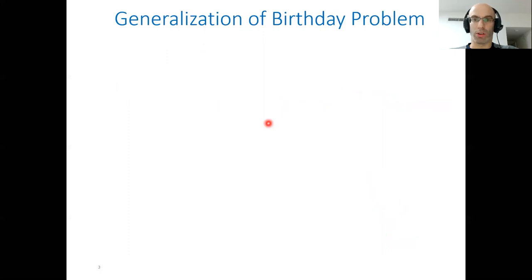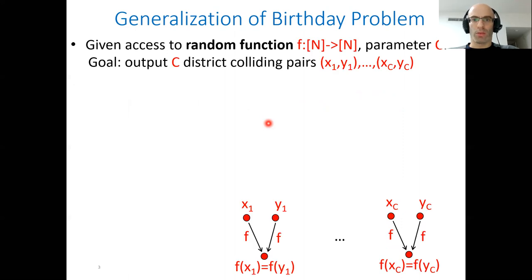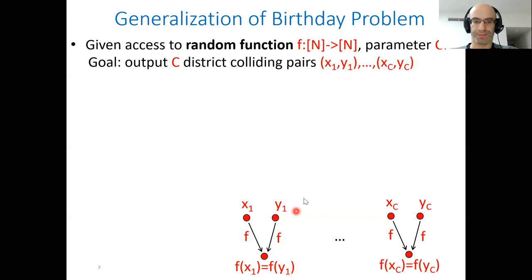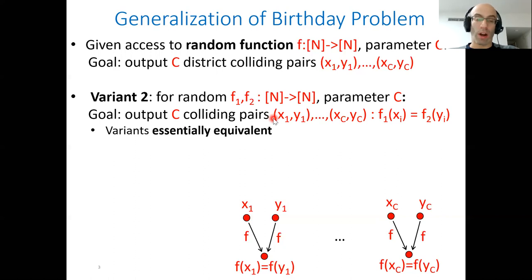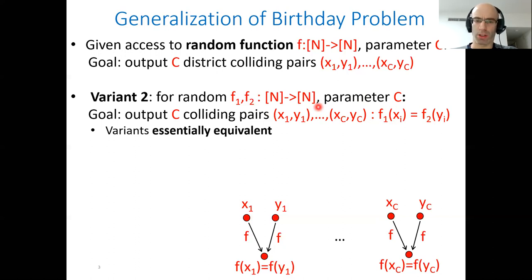Now let's consider a generalized variant of this problem. The setting is essentially the same but now we're also given a parameter c, and the goal is to output c distinct colliding pairs x1, y1, ..., xc, yc, meaning that for each pair, xi is different than yi but they have the same image under f. We also consider a variant where we have access to two random functions, and the goal is to output c colliding pairs between these two functions, meaning f1(xi) equals f2(xi). These variants are essentially equivalent.